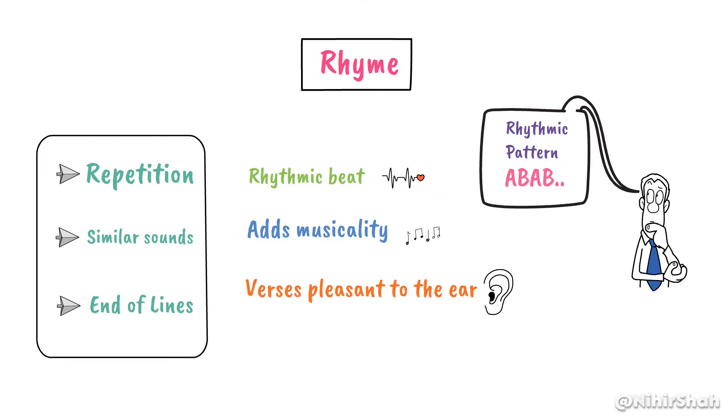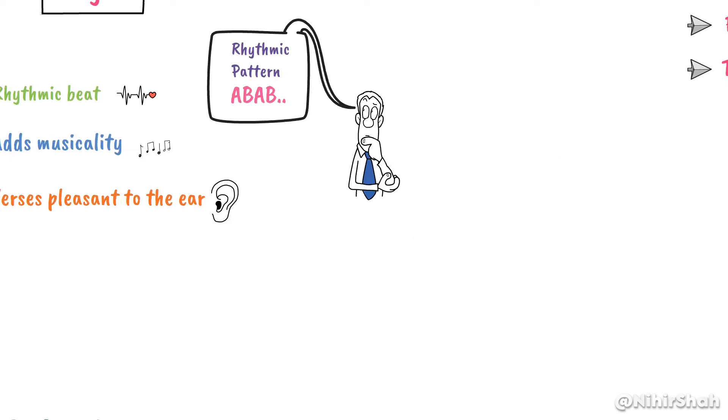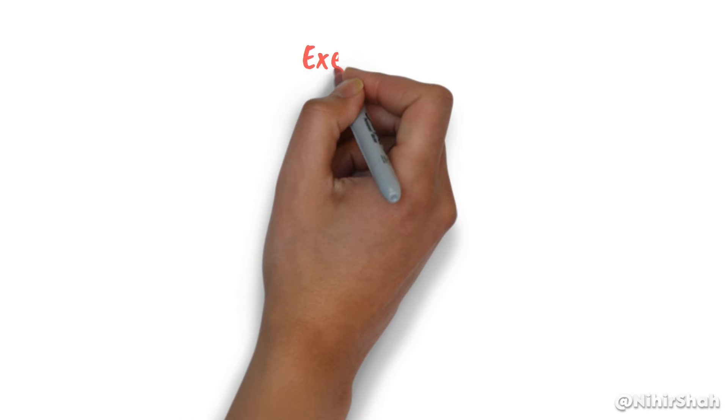So, now we have learned what is a rhyme, then we looked into the rhyme schemes, and finally we understood different rhyme styles. Now it's time for exercise. Let's see how well you have understood rhyme. In this exercise, you need to select from the given options — one option is correct.